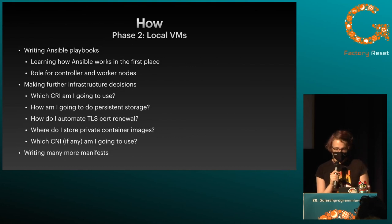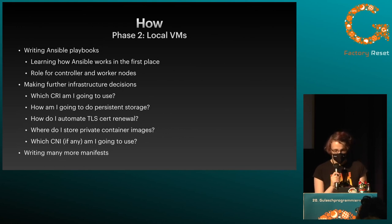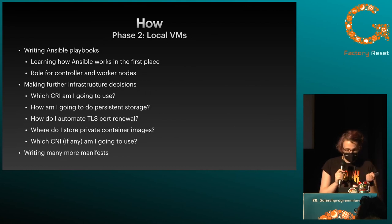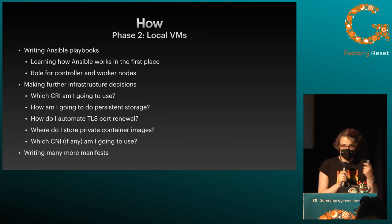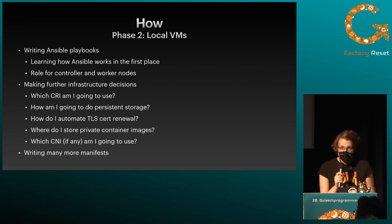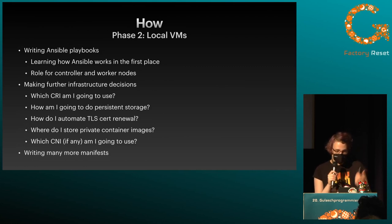The longest phase was local VMs. I set up three different VMs on a local host and started writing Ansible playbooks. First I had to learn how to use Ansible. I wrote roles for controller and worker nodes, and made even more infrastructure decisions: which CRI — which container runtime — to use. There's containerd, which is from Docker; there used to be support for Docker directly but it isn't supported anymore. And there's also CRI-O, which is another option.